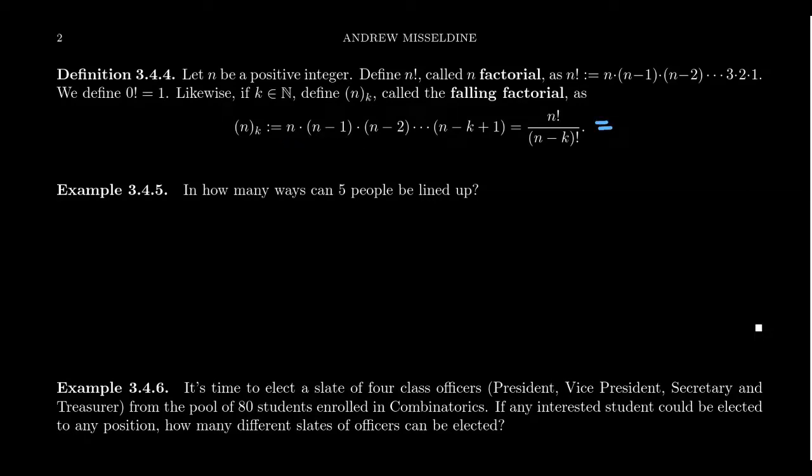Using notation we've seen before, we can write this as a product, a generalized product where you're going to take n minus i, where the i will range from zero up to k minus one. You can also define this symbol, the falling factorial, using factorials itself, where you take n factorial and you divide it by n minus k factorial.